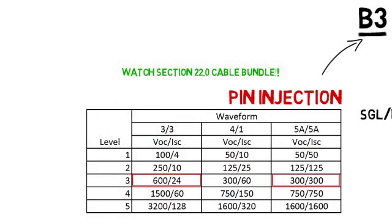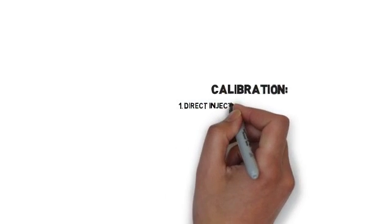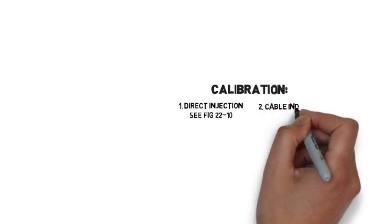Now that we've got the test levels and waveforms nailed down, let's talk about the calibration. Typically, there's one of two methods used: direct injection, where the power is applied directly to the line under test, or cable induction method.